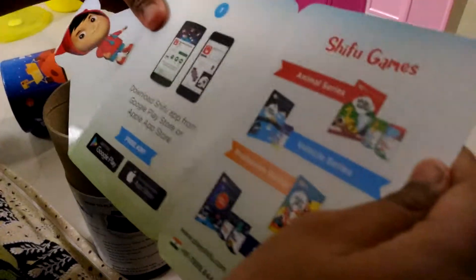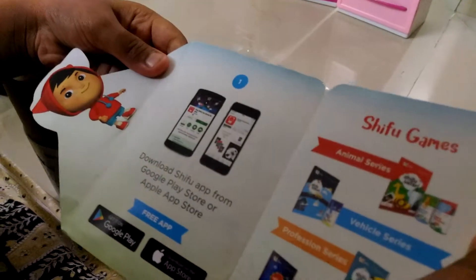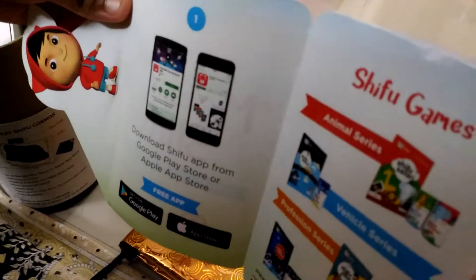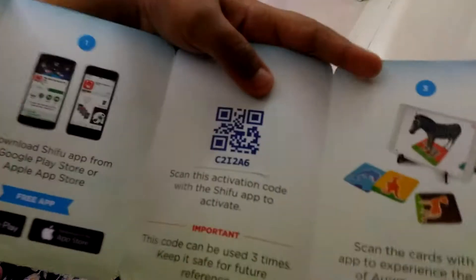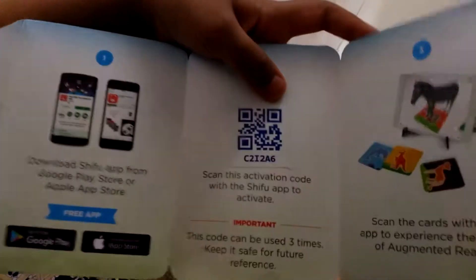We have a Shifu email and it says to download Shifu app from Google Play Store or App Store. I already told you in the last video. You see this QR code, you have to scan it. Scan this activation code with the Shifu app to activate.